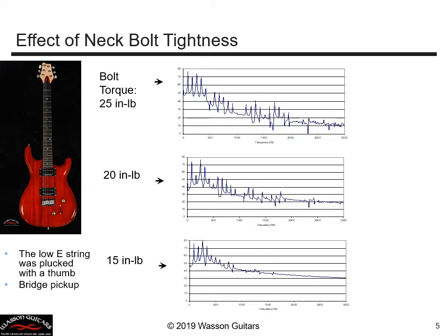Now let's use our tool for another purpose. Remember how I went to extremes to design my neck joint so that the body and the neck work together as one structural member when vibrating? What happens if I loosen the bolts from the full torque value of 25 inch-pounds and hit the low E string? The signal output looks like the top plot.